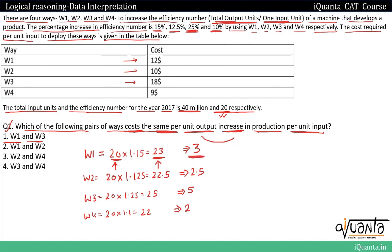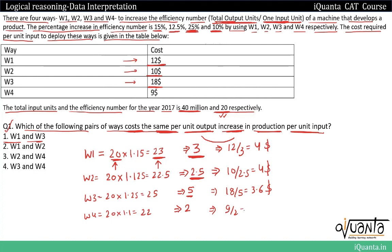For W1: 3 output units increase costs $12, so per unit output = $12 ÷ 3 = $4. For W2: 2.5 output units increase costs $10, so per unit output = $10 ÷ 2.5 = $4. For W3: 5 output units increase costs $18, so per unit output = $18 ÷ 5 = $3.6. For W4: 9 ÷ 2 = $4.5 per unit output. We can see that for W1 and W2 the cost per unit output increase is the same — $4.